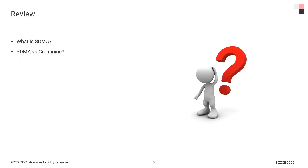We've talked about what SDMA is before — there are other sessions in our IDECS continuing education series if you want more information, including a session on SDMA versus creatinine. The big things with SDMA compared to creatinine: it goes up much sooner with a reduction in GFR than creatinine, so it's an earlier marker, less affected by things like muscle mass, and can be a marker of things secondarily affecting the kidneys. Creatinine is still a very useful marker.